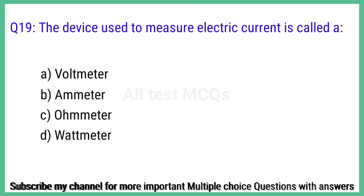Question number 19. The device used to measure electric current is called? The right answer is option B: Ammeter.